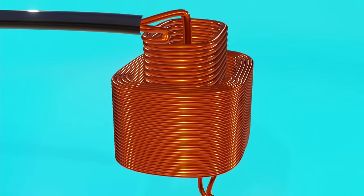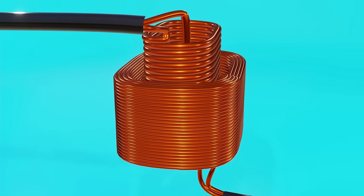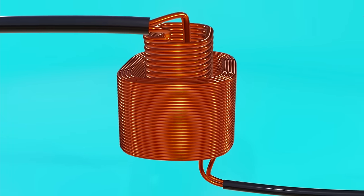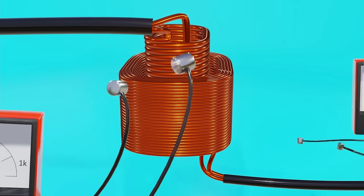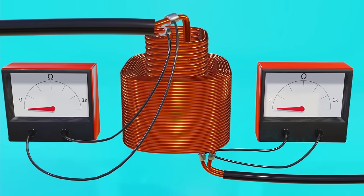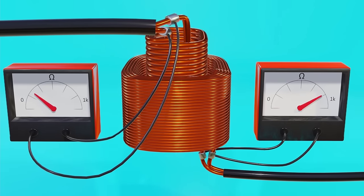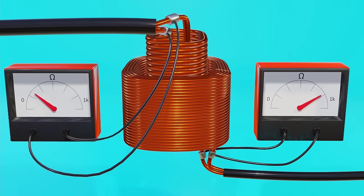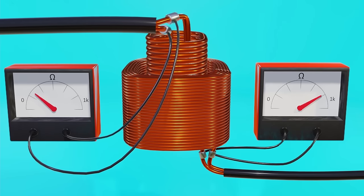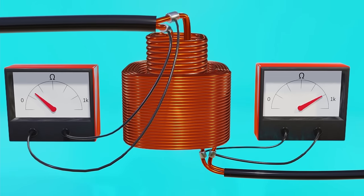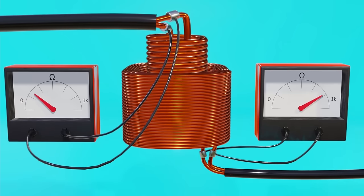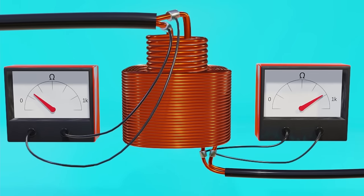This same difference in diameters means that in case we have a transformer in which we do not know which terminal corresponds to which coil, since they are generally covered, we could measure both resistances and deduce that the one that is smaller corresponds to the coil with the fewest turns, since a greater cross-sectional area and a smaller length means less resistance.